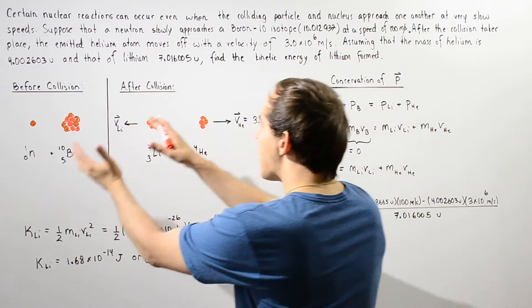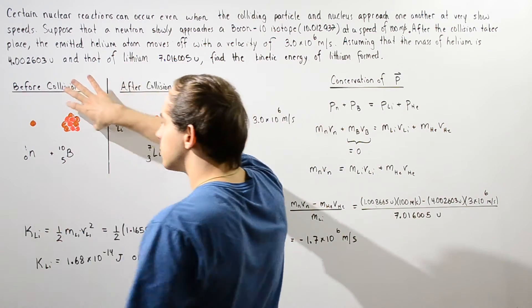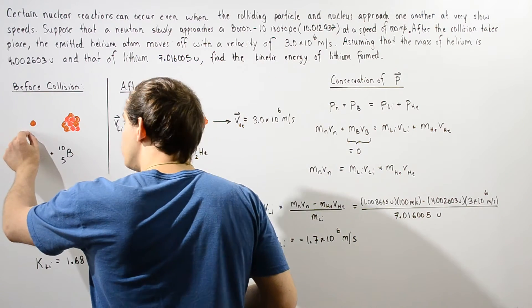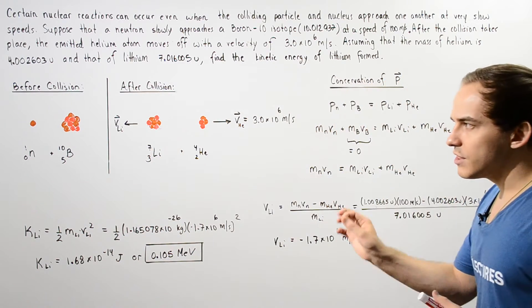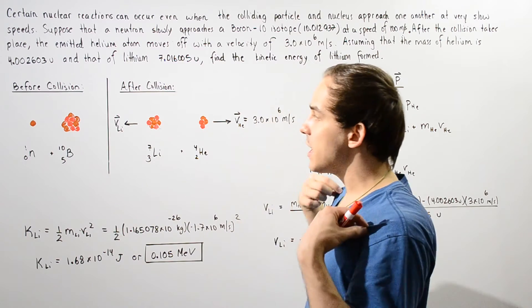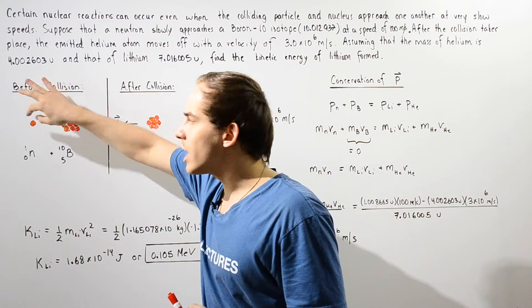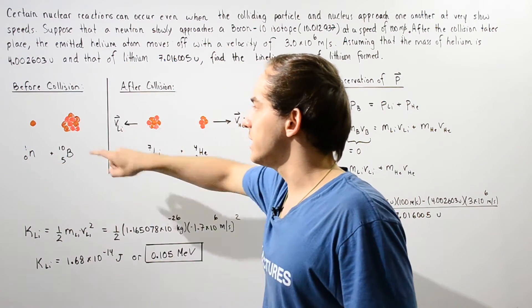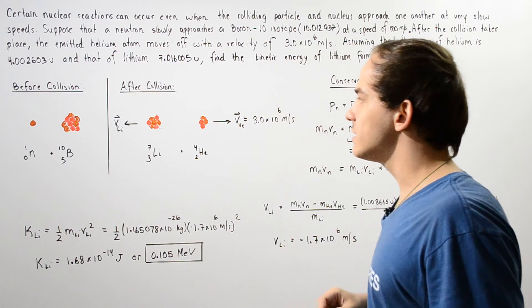Let's examine the before and after picture. Before the collision, we have a stationary boron atom that has 5 protons and 5 neutrons in the nucleus. Our neutron particle approaches the nucleus with a very low velocity. The neutron can approach and collide with the nucleus even at low velocity because it does not have a net charge, meaning it will not be repelled by the electric forces from the protons or electrons orbiting the nucleus.